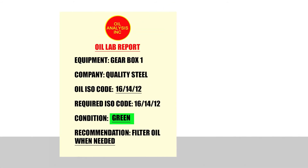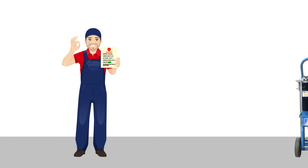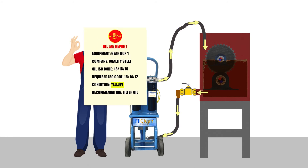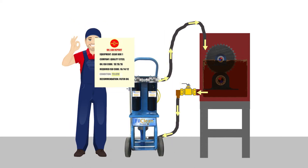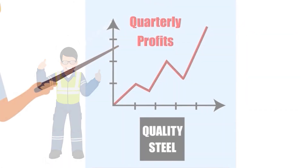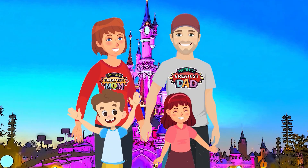Once John was receiving his regular lab reports and therefore had his early warning system in place, he was able to become more proactive by filtering his oil with his new MSC Filtration Technologies fill-clean LHC filter cart on a regular basis, or whenever the oil was deemed out of specification. John's boss became very happy because plant productivity soared along with company profits. So John got a big raise, which he used to take his family to Disney World.